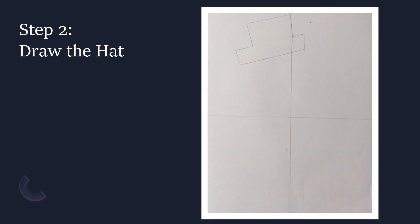Step two: we will draw the hat first. We want to use our ruler to make straight lines. The shape of the hat is almost like two rectangles stacked on top of one another, with the bottom one being skinnier and longer. You'll want to place the hat near the top of your paper with the majority of it placed in the upper left section. I tilted mine, but you can draw yours however you wish.